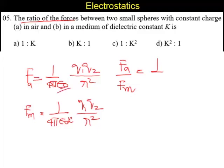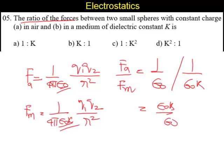We can say this and this as a variable point, right? So it is 1 by epsilon naught. It is 1 by epsilon naught into K. So it is going to be epsilon naught into K by epsilon.